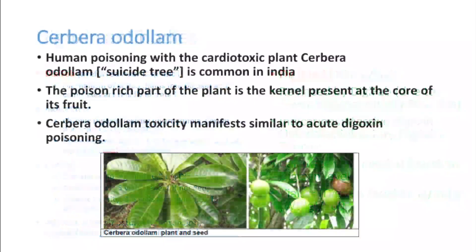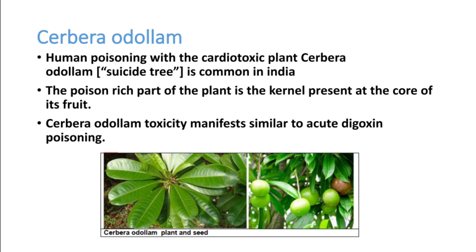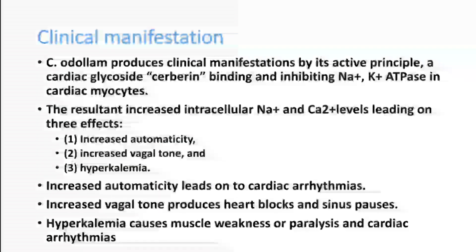Another plant poison is cerebro-odolum, which has features similar to digoxin toxicity. Human poisoning with the cardiotoxic plant cerebro-odolum, also called the suicide tree, is common in India. The most poison-rich part of the plant is the kernel present in the core of the fruit. Cerebro-odolum toxicity manifests similarly to acute digoxin poisoning — you can see the picture of both the plant and the seed.